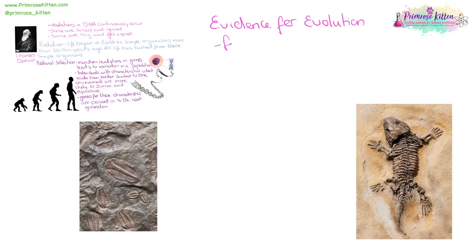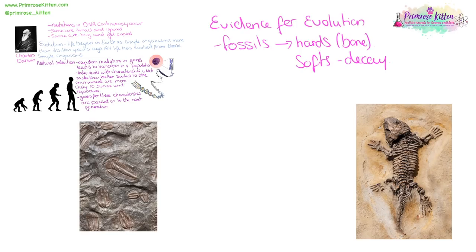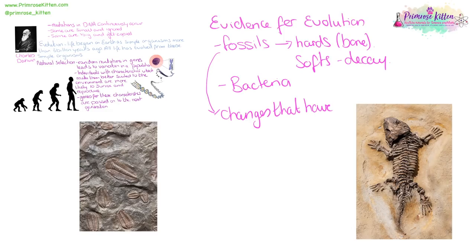Evidence for evolution comes from fossils. Not everything leaves fossils, because fossils come from the hard parts — the bones — the soft bits are just going to decay away, so won't leave fossils. We can see evolution happening with bacteria because they multiply very quickly, every 20 minutes in some circumstances. So we can see adaptations for natural selection being passed on and happening very, very quickly. Fossils can show us changes that have happened and how different animals are related.